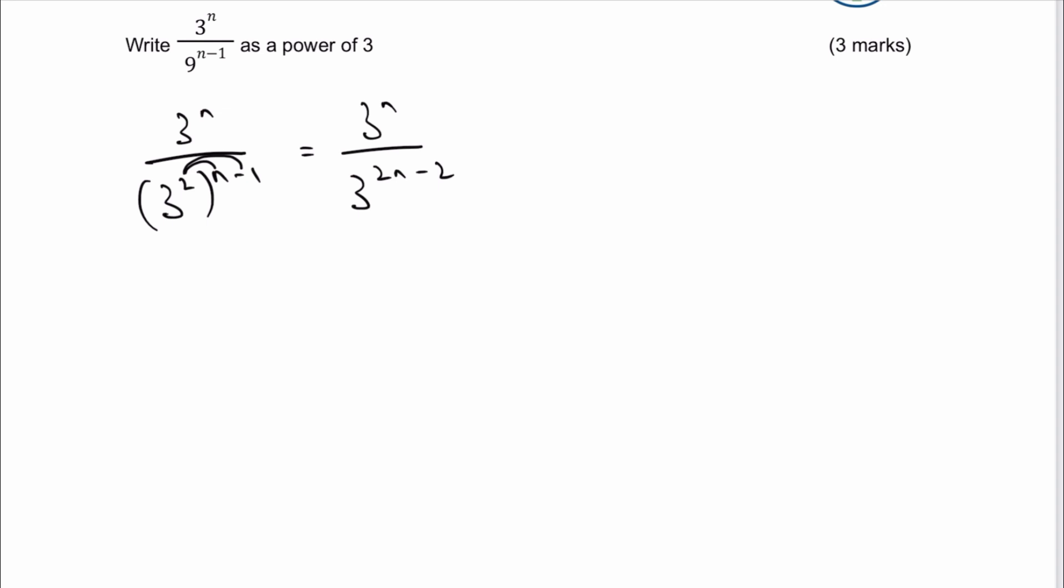So what I'm going to do now is, because effectively these two numbers are being divided by each other, and that's the function of the fraction, what I'm going to do is subtract the indices. So I'm going to say that's the same as saying 3 to the power of n minus brackets 2n minus 2. Now, it is important to keep these brackets in place, because when we remove the brackets, it's going to have an effect.